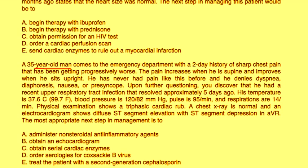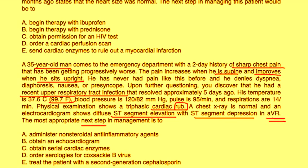A 35-year-old man comes to the emergency department with a two-day history of sharp chest pain that worsens when supine and improves sitting upright. He had a recent upper respiratory tract infection that resolved five days ago. Temperature 99, blood pressure 120, pulse 95, respirations 14. Physical exam shows a triphasic cardiac rub. Chest x-ray is normal and EKG shows diffuse ST segment elevation and ST segment depression in AVR. This is another classic clinical vignette for pericarditis, and the most appropriate next step in management is NSAIDs — first-line treatment.